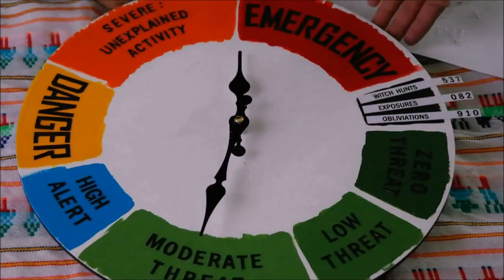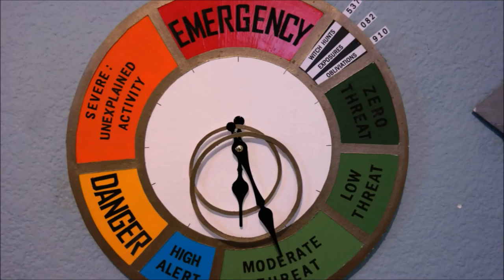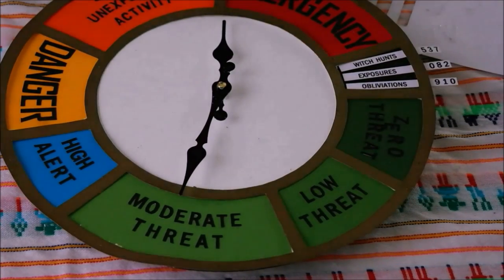The phrases are starting on red: emergency, witch hunts, exposures, obliviations, zero threat, low threat, moderate threat, high alert, danger and severe unexplained activity. Stick down the frame to the clock and then glue the phrases.